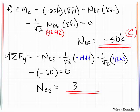And then summing forces in the y direction would give me 30 kips that being in tension. And that concludes the approximate analysis of this truss.